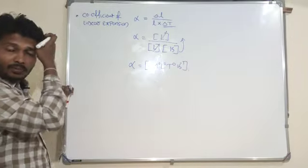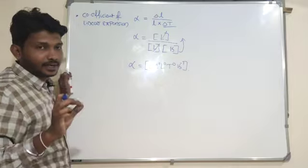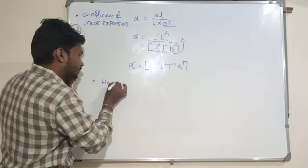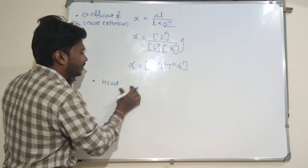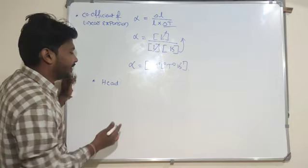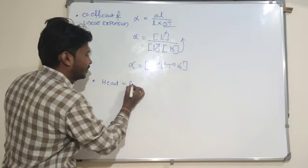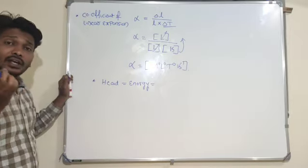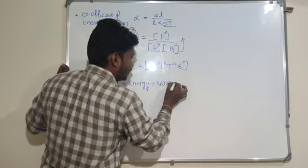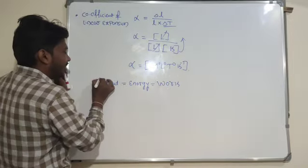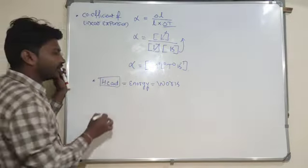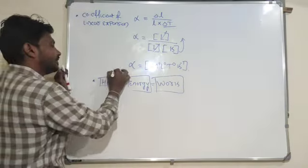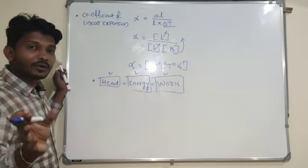This is the way to write the dimensional formula if there exists any temperature term. For example, the dimensional formula for heat — heat is nothing but a form of energy. Heat equals energy, and energy is the capacity to do work. Heat, energy, and work — these three physical quantities carry the same dimensional formula.